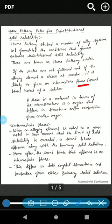So here I want to explain what is a phase. A phase in a material, in terms of its microstructure, is a region that differs in structure and/or composition from another region. For example, if there is ice in a glass and it is melting, now there is solid and liquid - two phases.